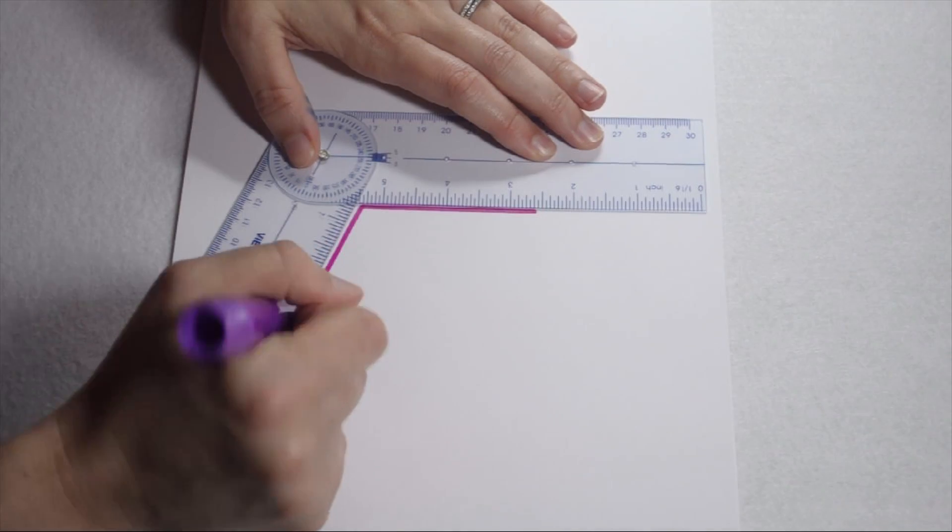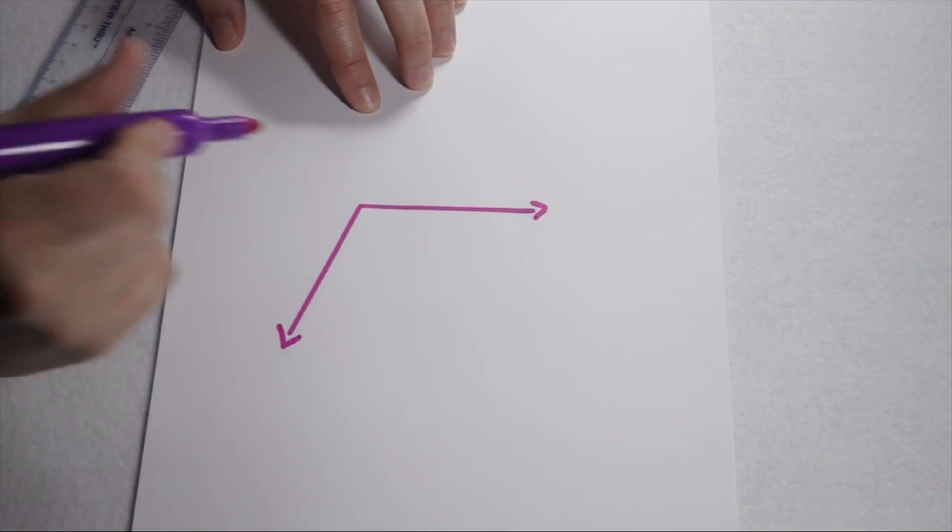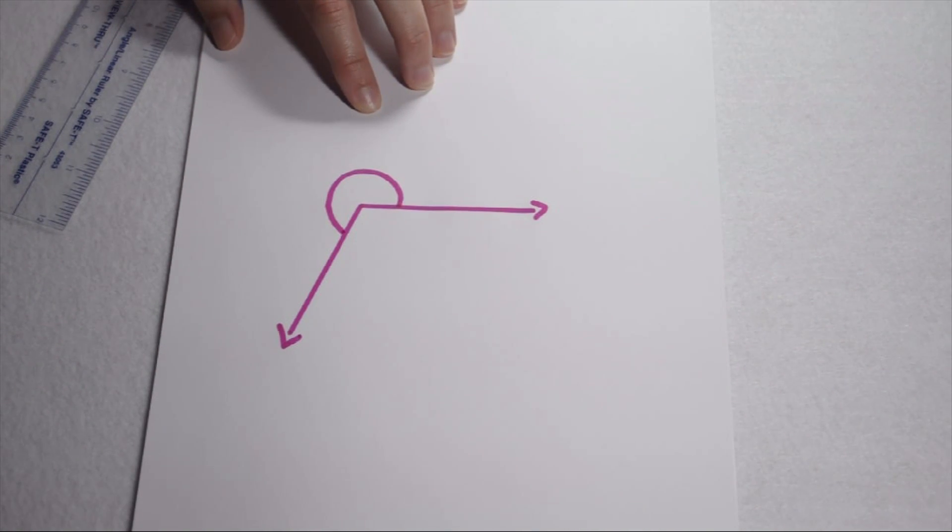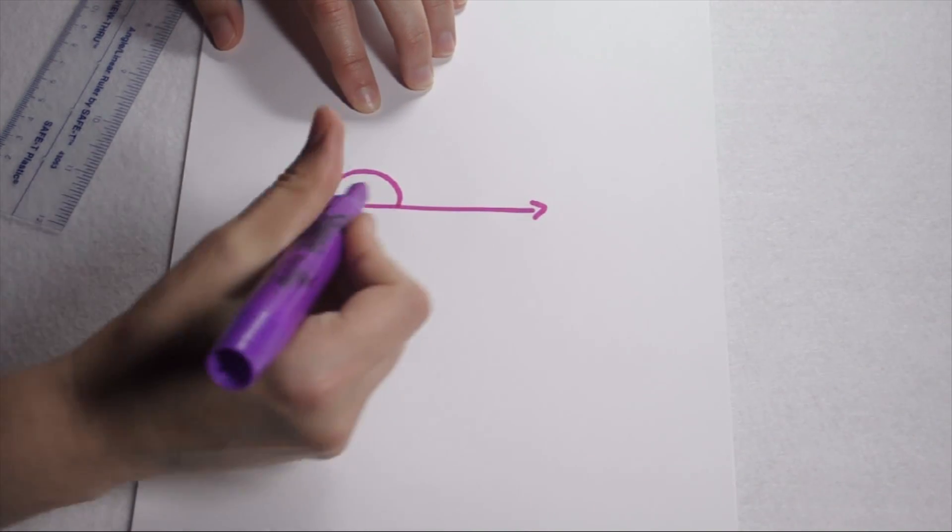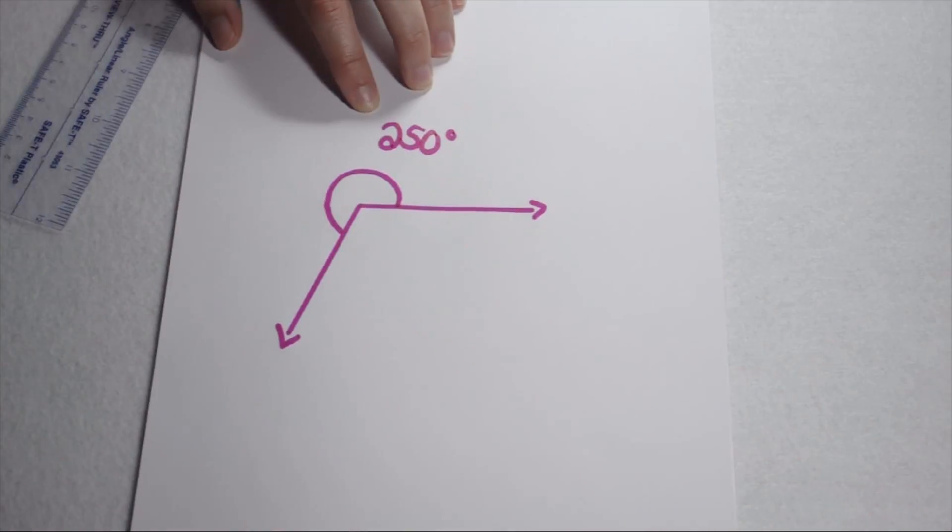Now, since we want this to be a reflex angle, we need to make sure we label it to show people that we traced this path here on the outside. That's how we communicate that we are measuring the reflex angle, not the interior angle. So this is our 250 degree reflex angle.